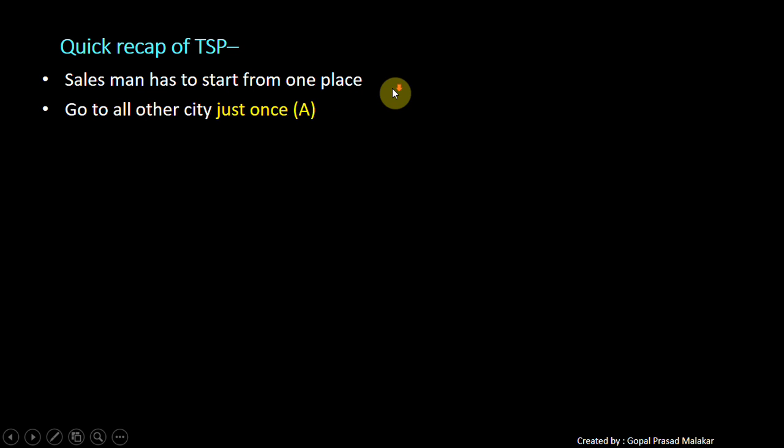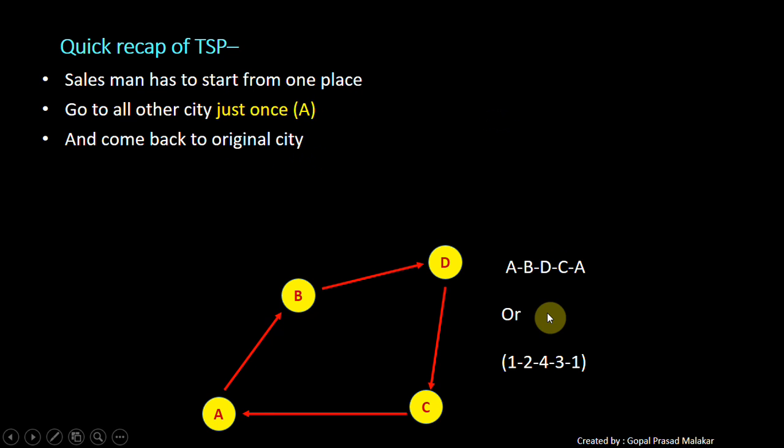Quickly recap of travelling salesman. Salesman has to start from one place, has to go to all city just once, and come back to the original city. This is an example of a solution: A, B, D, C, A, or if you call it 1, 2, 4, 3, 1. This is an example of a chromosome.